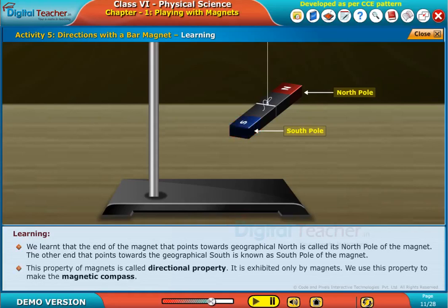This property of magnets is called directional property. It is exhibited only by magnets.